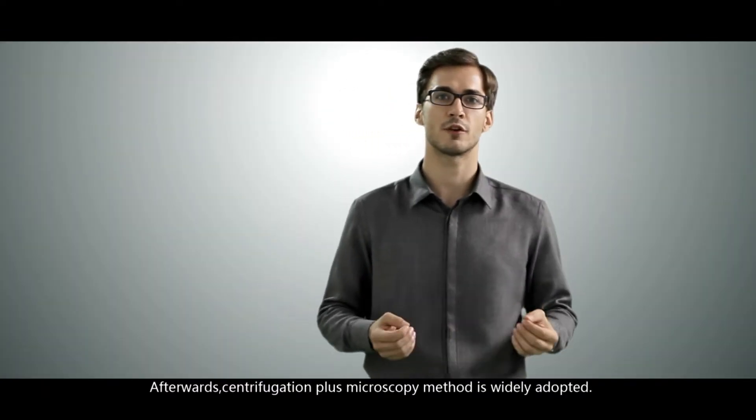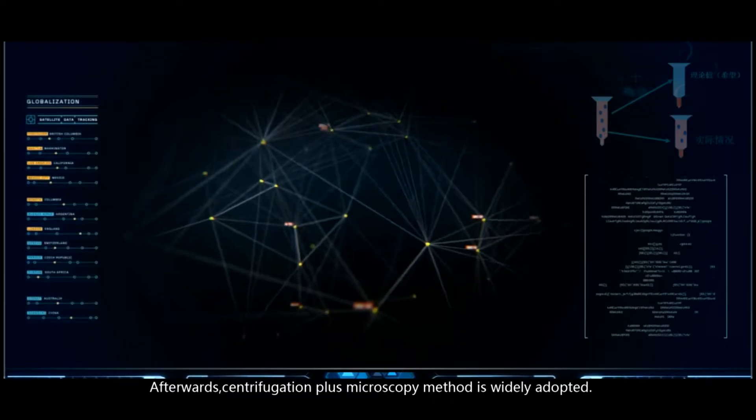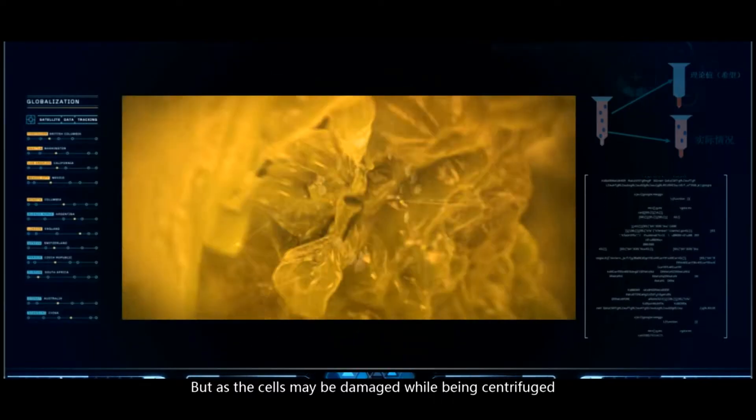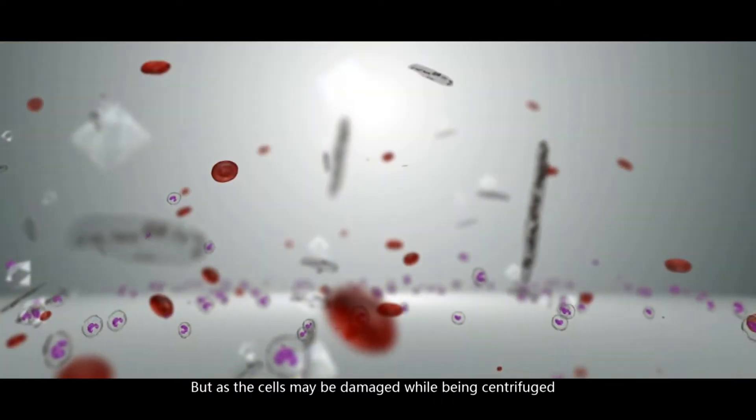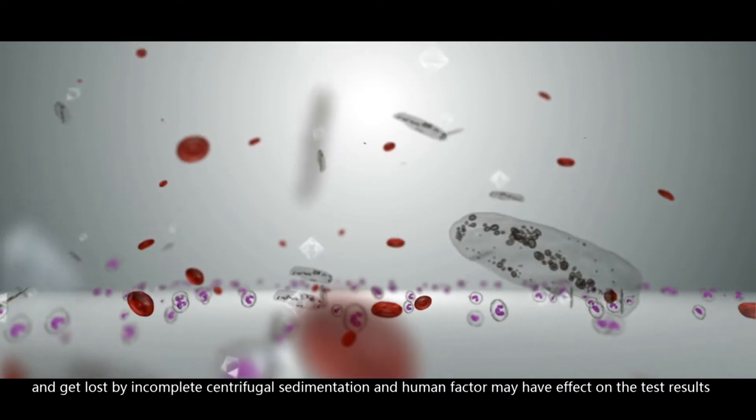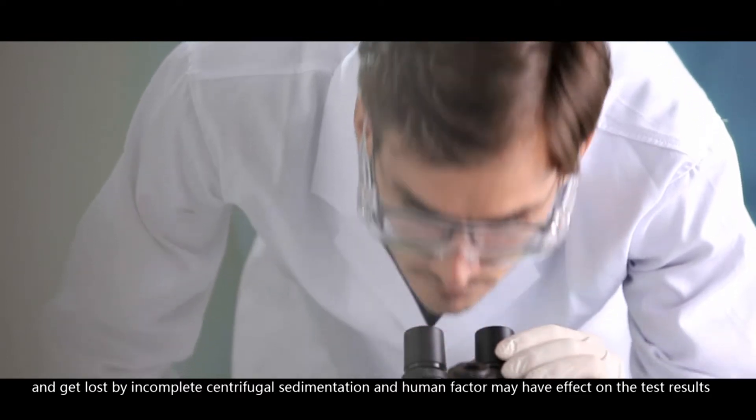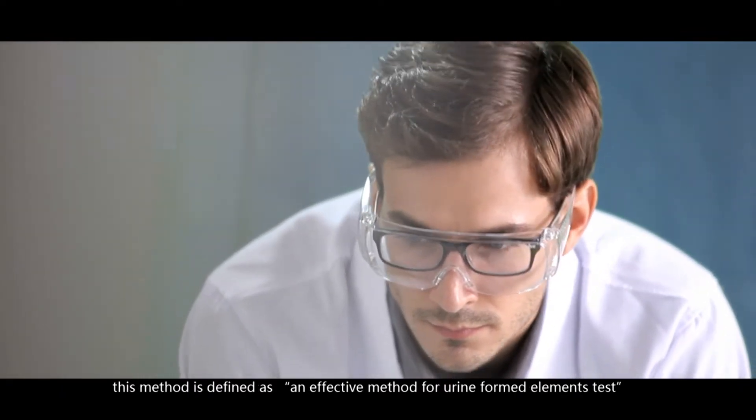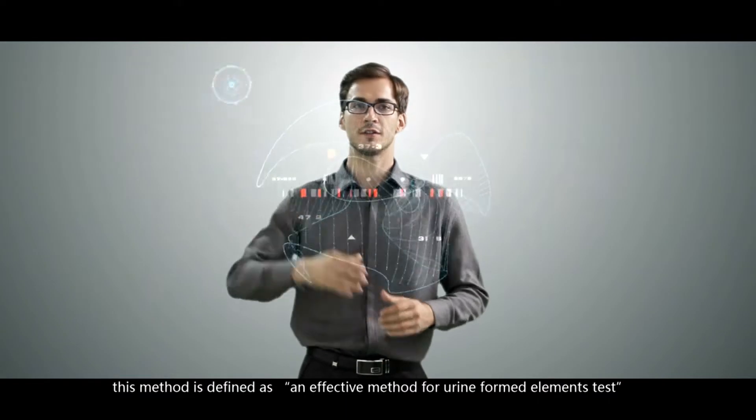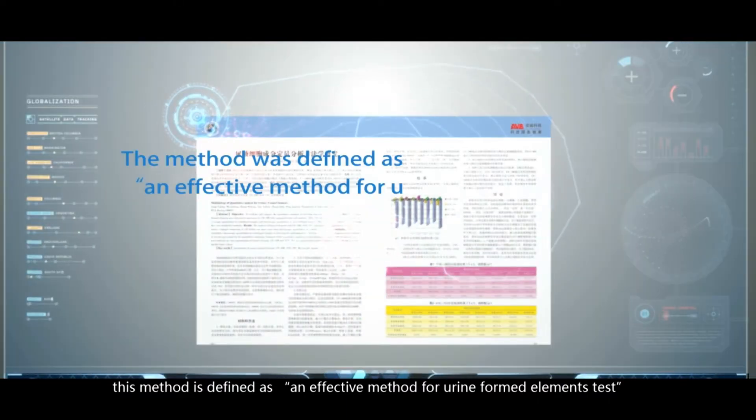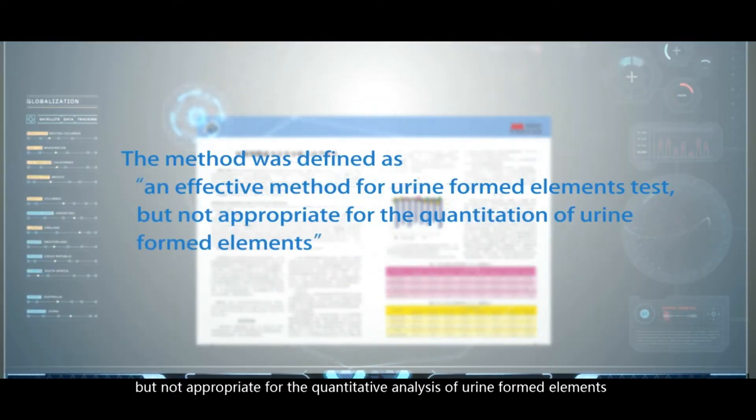Afterwards, centrifugation plus microscopic method is widely adopted. But as the cells may be damaged while being centrifuged and get lost by incomplete centrifugal sedimentation, and human factor may have an effect on the test results. This method is defined as an effective method for urine formed elements test, but not appropriate for the quantitative analysis of urine formed elements.